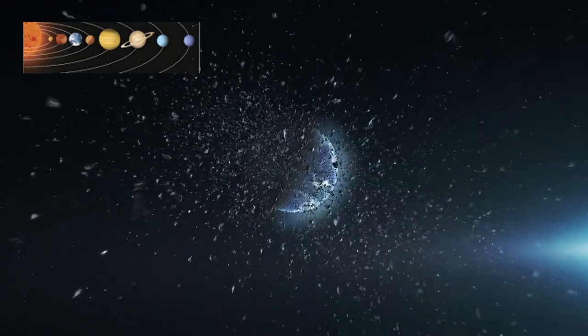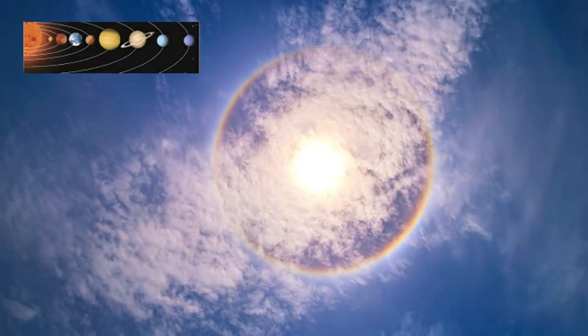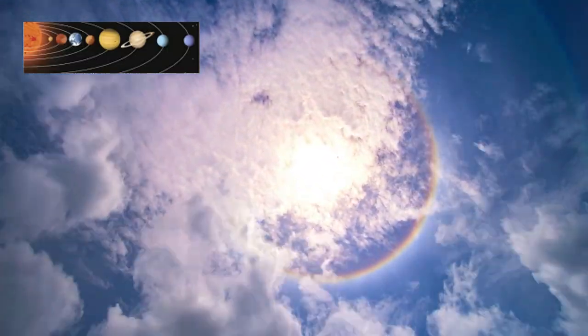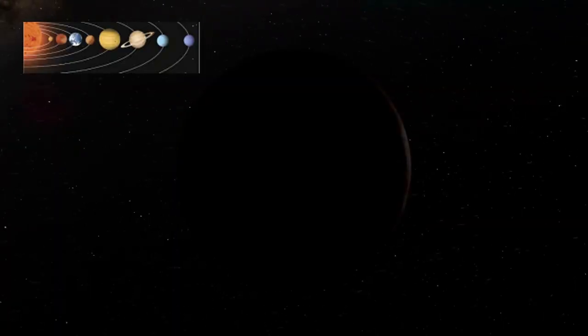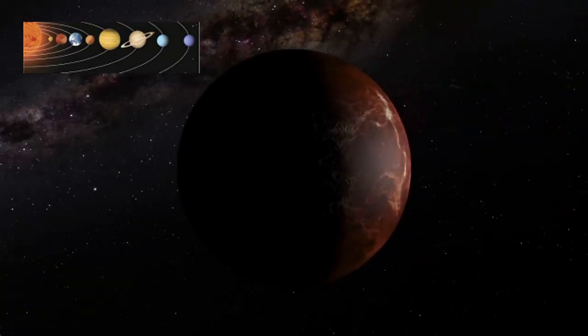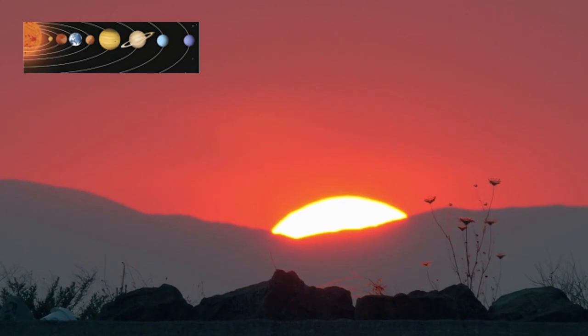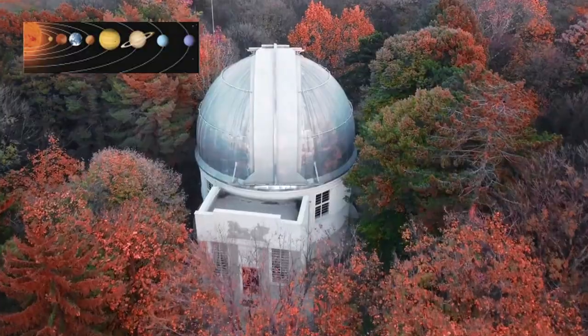But not all comets of 2025 are meant for backyard stargazing. 414P Talman Stereo will slip so close to the Sun's glare that ground-based telescopes won't catch it at all. On September 27, it will dive to just over 0.5 AU from the Sun, well within Venus's orbit. From Earth's perspective, it vanishes into daylight.